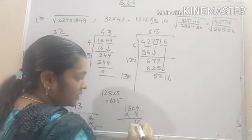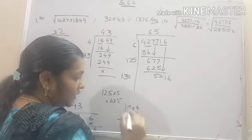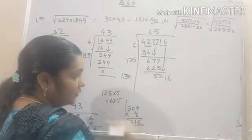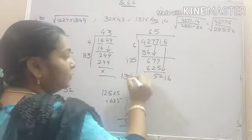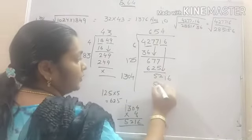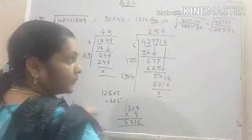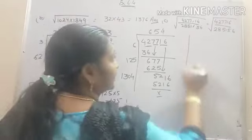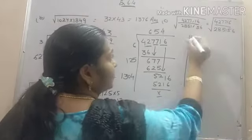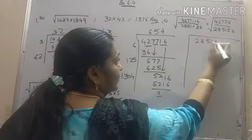1304 into 4. 4 times 4 are 16. 4 times 3 are 12, 1 carry. 4 times 1 are 4, 5. We are getting exact value. 5216. Okay. Let's find the root of the second number.